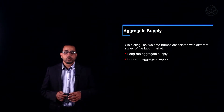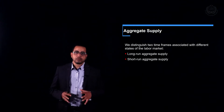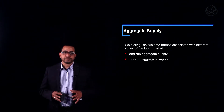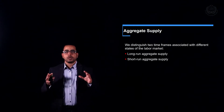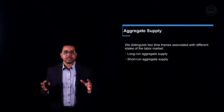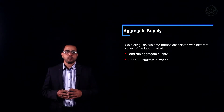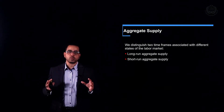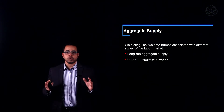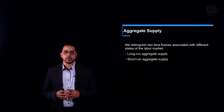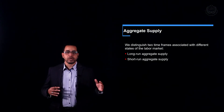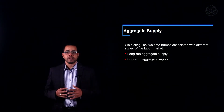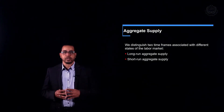When we talk about supply in the frame of the aggregate demand and aggregate supply model, we have to differentiate between two time dimensions: the long run and the short run.